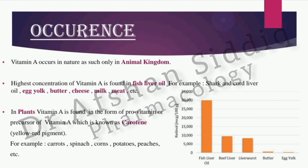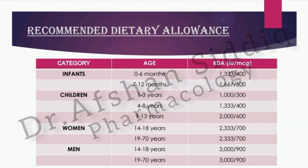Examples of colored plant sources include carrots, spinach, corn, potatoes, and peaches. As for the daily recommended allowance of vitamin A for women and men at the age of 14 to 18: about 2,333 international units is required for females, while males require 3,000 international units. Almost all vitamin daily recommended allowances are distributed on the basis of age and sex.